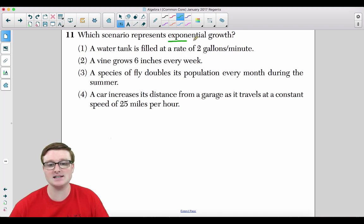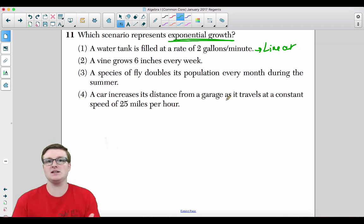Number 11. Which scenario represents exponential growth? A water tank is filled at a rate of two gallons per minute. No, that is showing a constant rate of change. This is linear because after the first minute, there's two gallons. After the second minute, there's now four gallons. After the third minute, there's six gallons. You're increasing each minute by two gallons. The vine grows six inches a week. No, that's linear because every single week it's increasing by six inches.